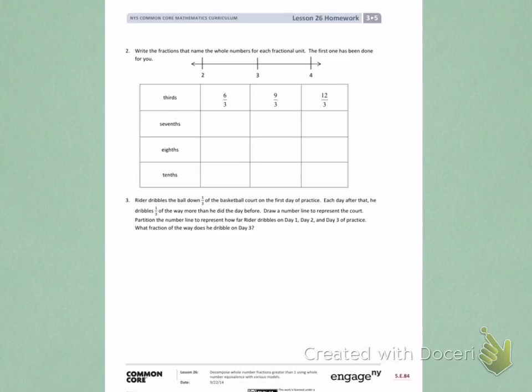So you can see 6 thirds is representing 2, 9 thirds is representing 3, 12 thirds is representing 4. That's because 2 times 3 is 6, 3 times 3 is 9, and 3 times 4 is 12.